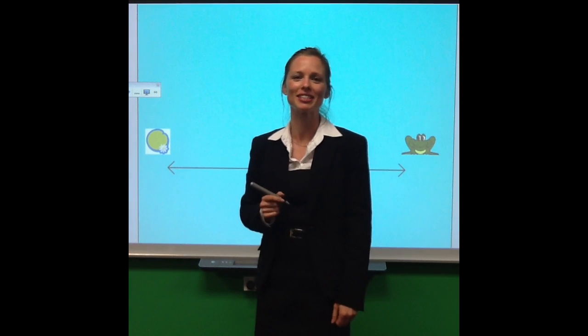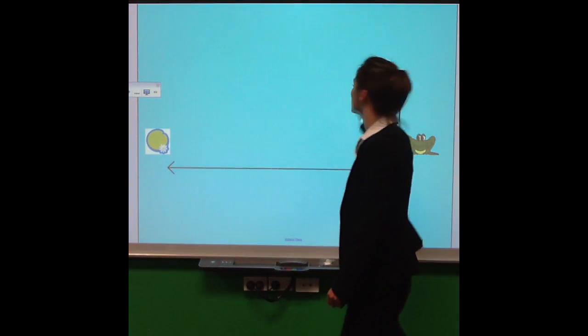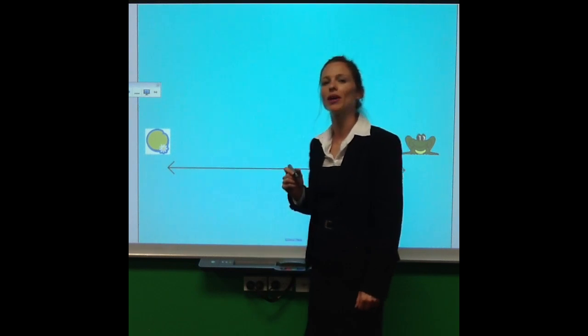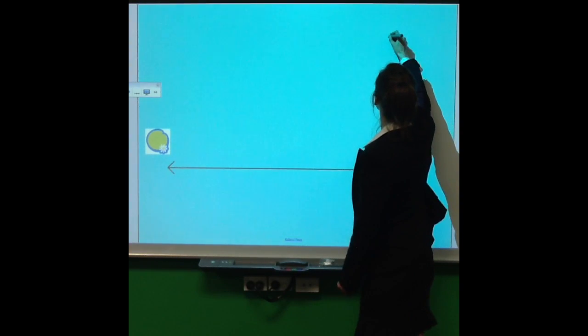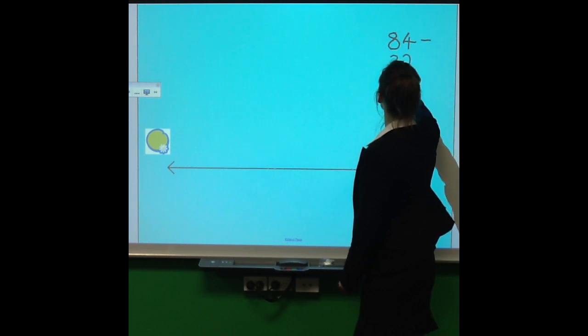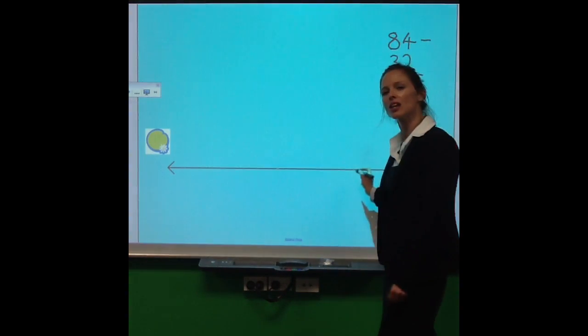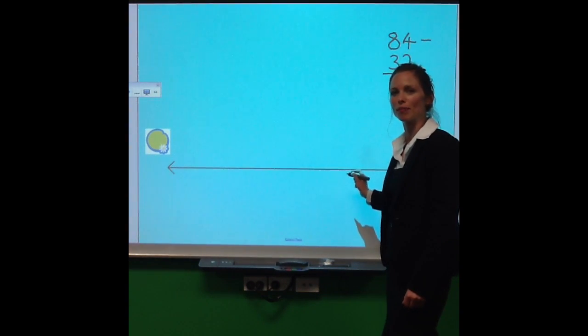Okay, let's give subtraction a go this time. Very similar, we just start in the other direction. So let's say we're looking at 84 take away 32. Again, we start with our bigger number, that's the 84. And this time I'm going to plot it on the right of my number line.